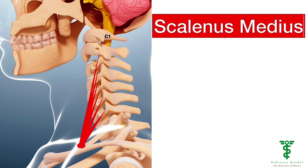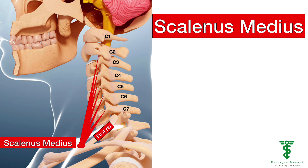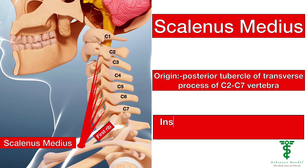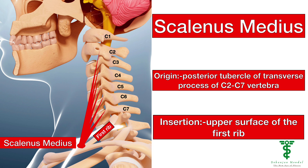The Scalene Medius Muscle takes its origin from the posterior tubercle of the transverse processes of C2 to C7 vertebra, and inserts on the upper surface of the first rib. Its action is to elevate the first rib, and it also acts as an accessory muscle of inspiration along with the sternocleidomastoid muscle.